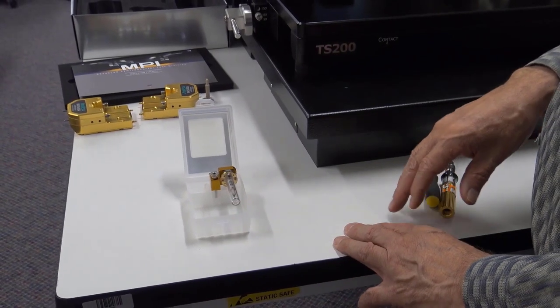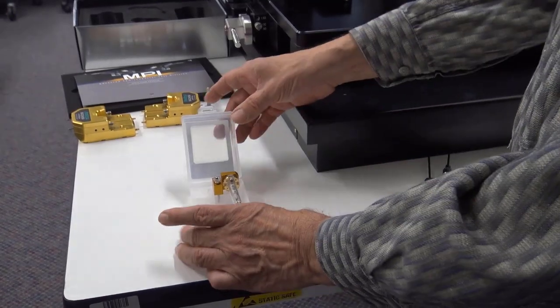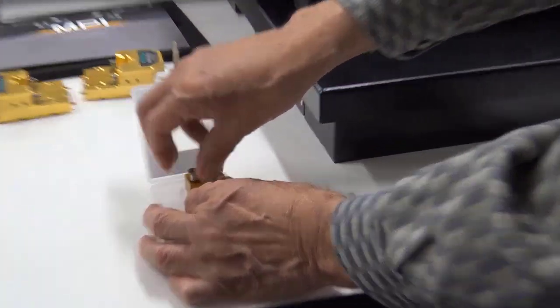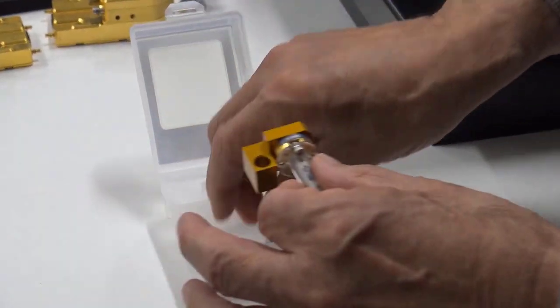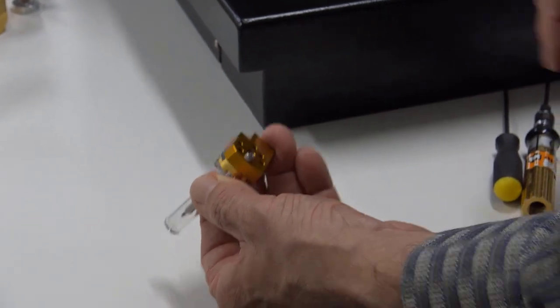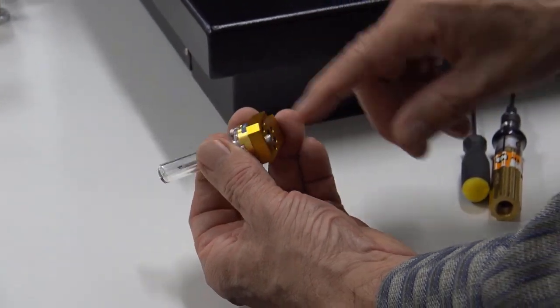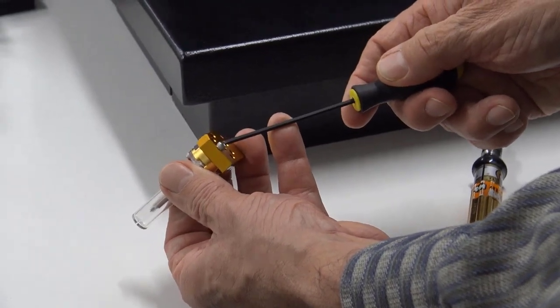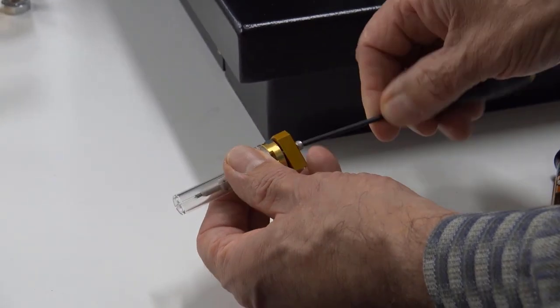So here we have the T220 probe in this case. So what we first do is remove it from the case. And then we can remove this mounting bracket from the probe just by disconnecting from here.